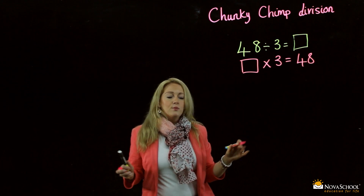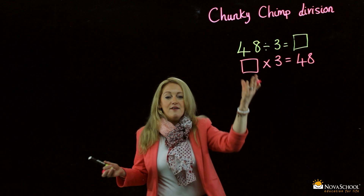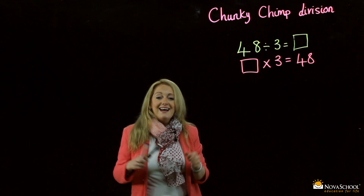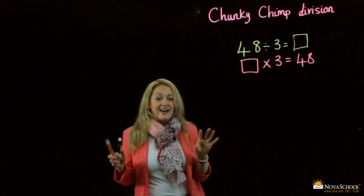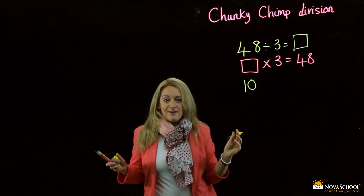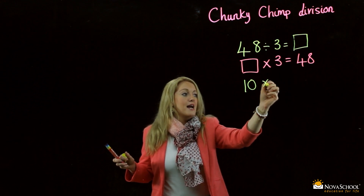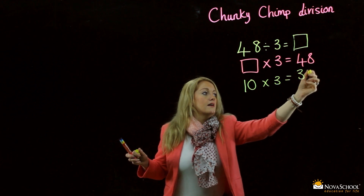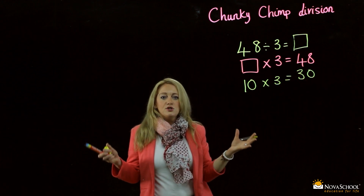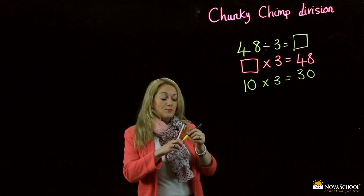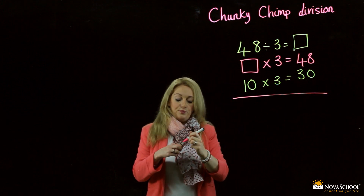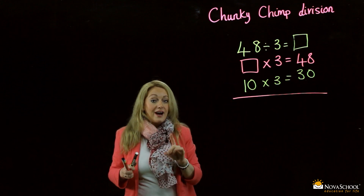Now, how am I going to find out? I have an empty box. What we do is we choose a number — a nice, happy number that ends in a 0. We choose 10, my favourite number. 10 times 3 equals 30. So I'm going to draw a ruler line and show you. Now we do a subtraction.